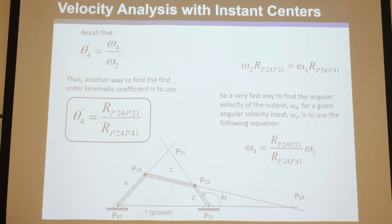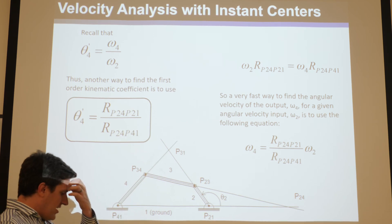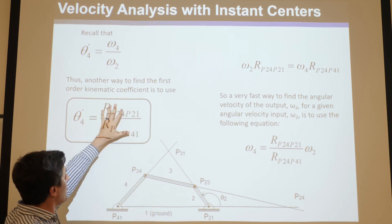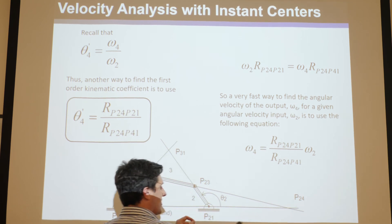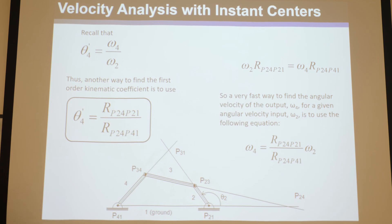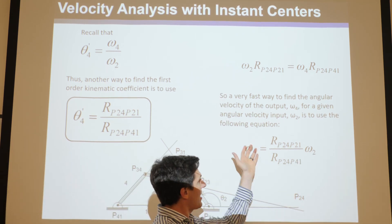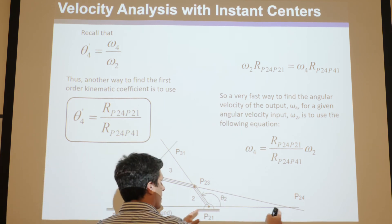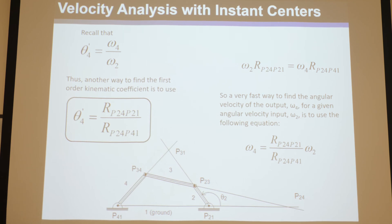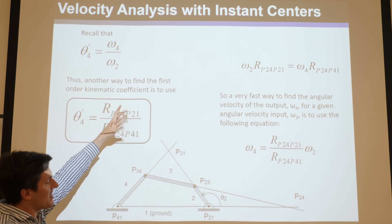So the ratio of those two distances is the first-order kinematic coefficient θ4′ with respect to input θ2. In practice: if the mechanism is drawn to scale, you simply take a ruler, measure the distance from P24 to P21 and from P24 to P41, divide them to get θ4′, then multiply by ω2 to get ω4. That's the complete velocity analysis — no need to re-derive from scratch each time.